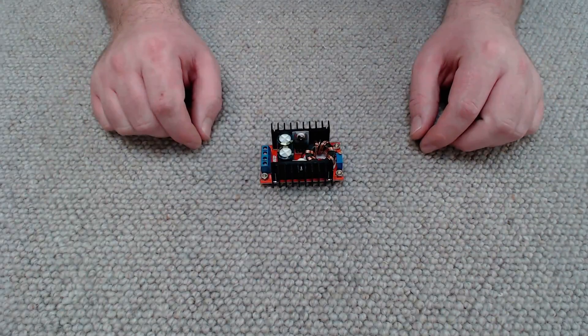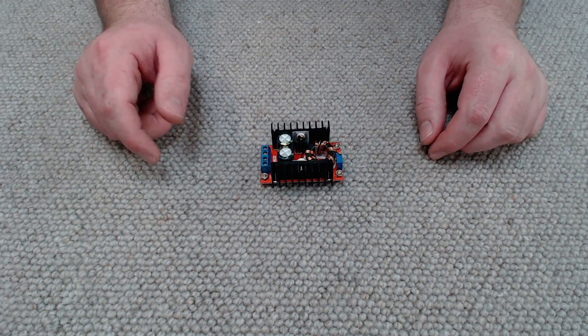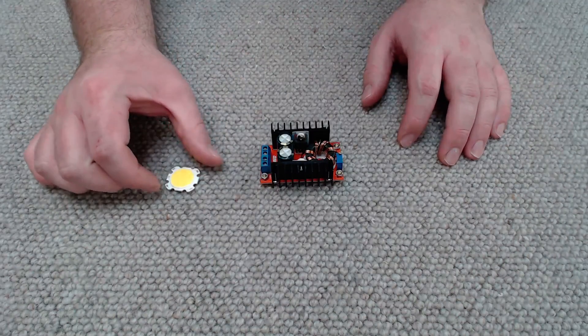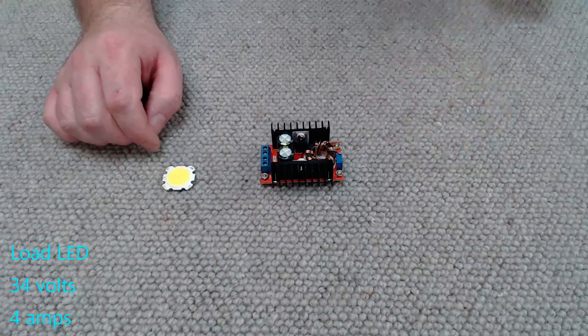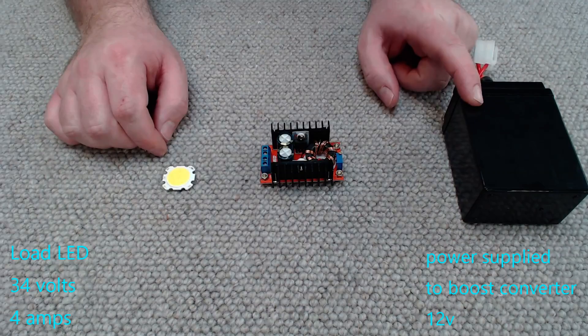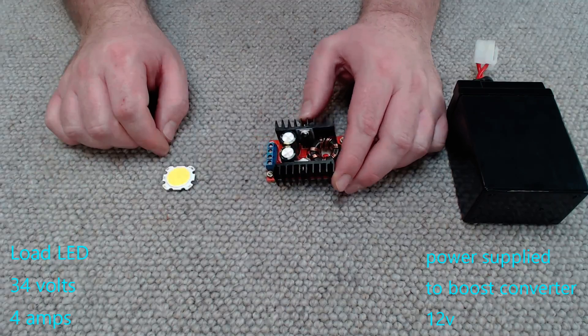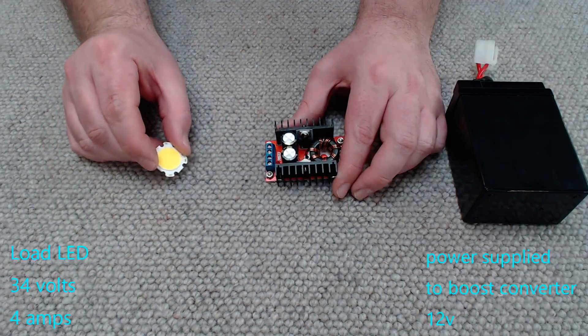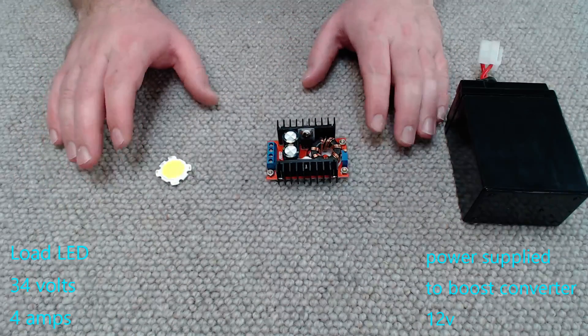So what should you look for in a boost converter? Well obviously we need to take into consideration what voltage and current our load is going to be. So hypothetically let's bring in this LED and let's say that this LED needs 34 volts at 4 amps to run at full brightness. And our power supply is going to be this 12 volt battery. So we've got 12 volts being fed into our boost converter. Now this boost converter is rated at 6 amps. And you'd be forgiven for thinking that we're only going to be drawing 4 amps, that's how many amps our LED can handle. Everything should be good right? In this setup absolutely not. And here's why.